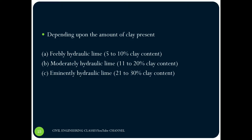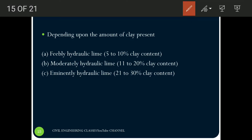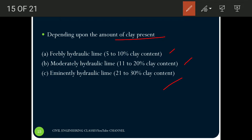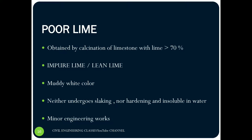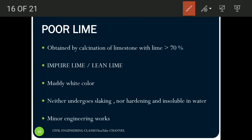Coming to the classification of hydraulic lime depending upon its clay content: first is feebly hydraulic lime, with 5 to 10 percentage clay content; next is moderately hydraulic lime, with 11 to 20 percentage clay content; and the third classification is eminently hydraulic lime, with 21 to 30 percentage clay content.